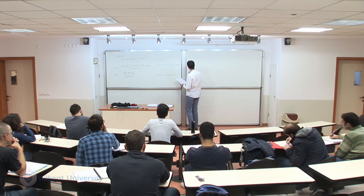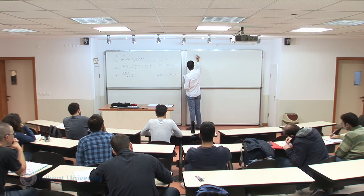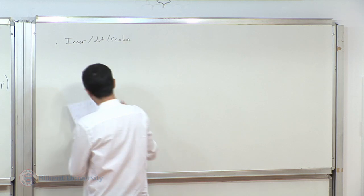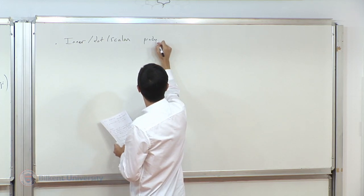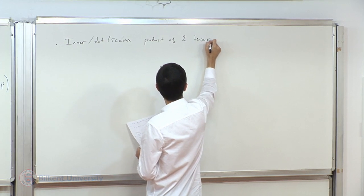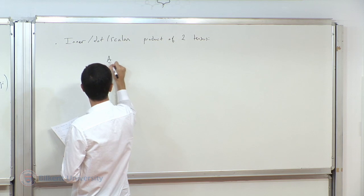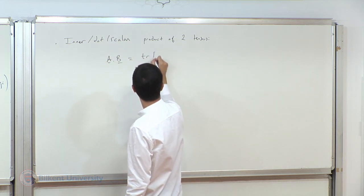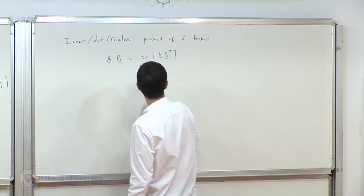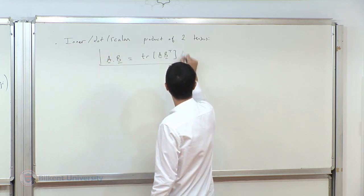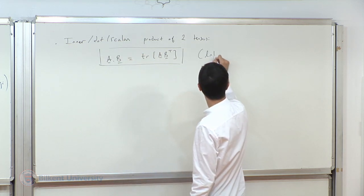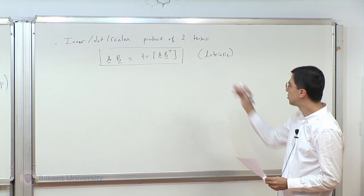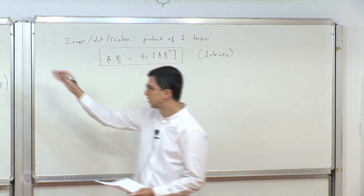While we have these definitions, let me go ahead and define another operator. This is the inner dot or scalar product of two tensors. Just like for a vector, my notation is such that I'm going to denote it with A dot B, and the meaning will be trace of A times B transpose. This is a new definition for us.